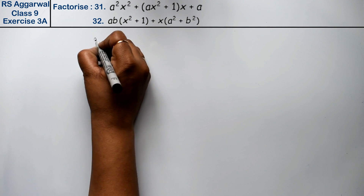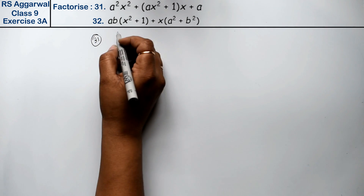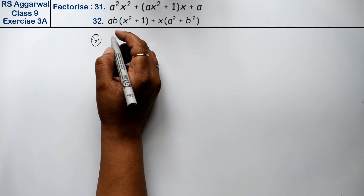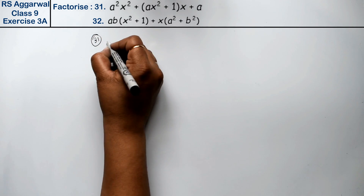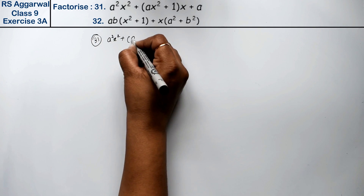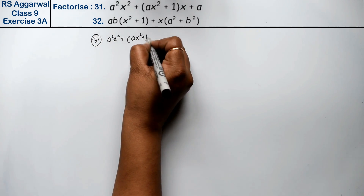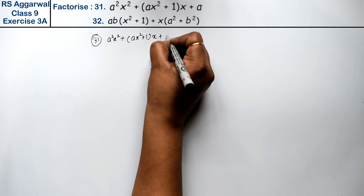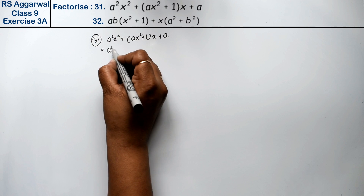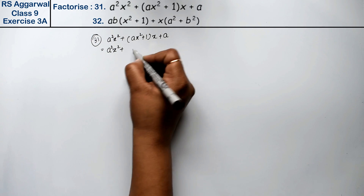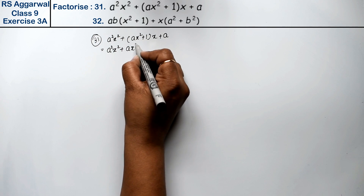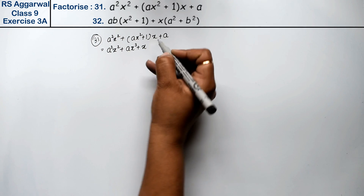Let's do question number 31 of exercise 3a, which is factorization of polynomials. Question 31 is a²x² plus ax² plus 1, into x plus a. So we write out: a²x² plus a into x² plus 1, which gives us ax³ plus x, plus a.